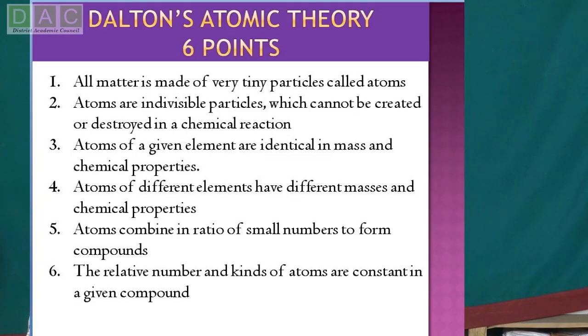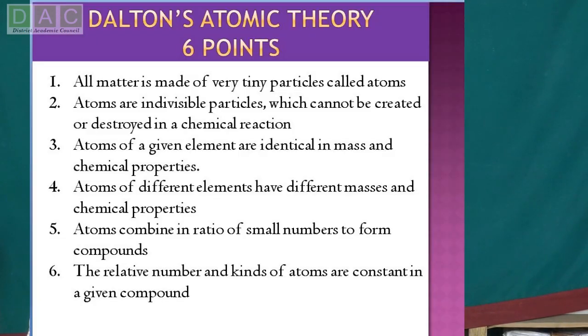The fifth point is that atoms combine in a ratio of small numbers to form compounds. Taking the example of water, the ratio is 1:8, and this ratio is always constant in the compound. The sixth and last point is that the relative number and kinds of atoms is always constant in a given compound. In a water molecule, there are two atoms of hydrogen and one atom of oxygen, and this number and kind of atom is always the same in the compound.